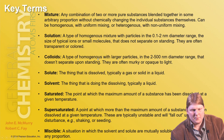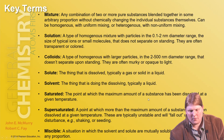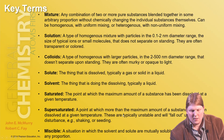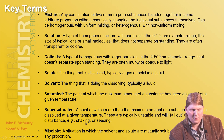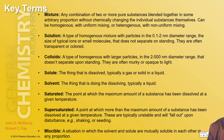Colloids are another type of homogeneous solution with larger particles in the 2 to 500 nanometer range. They don't separate upon standing and are often murky or opaque to light. Solute is the thing that's dissolved. Solvent is the thing that's doing the dissolving. Saturated is the point where the maximum amount of a substance has been dissolved at a given temperature. Supersaturated is where more than the maximum has been dissolved — these are unstable and something will fall out, sometimes requiring a disturbance.